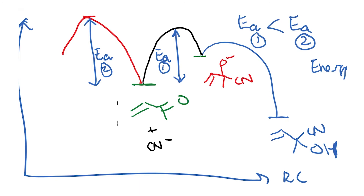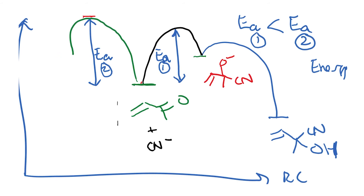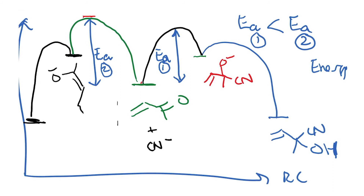At 5 to 10 degrees centigrade there is no conjugate addition actually happening. The conjugate addition product is formed via an enolate O-minus intermediate. The final product is the conjugate addition product. The important point is that Ea2 is greater than Ea1.